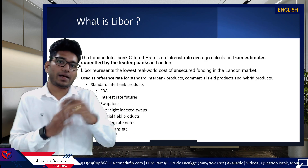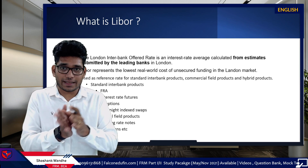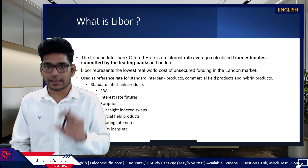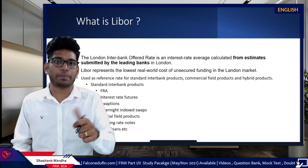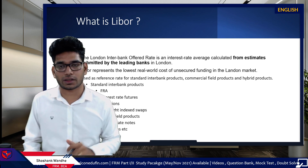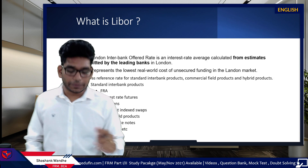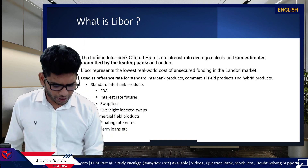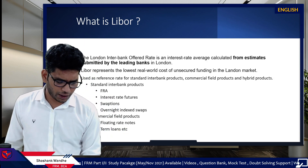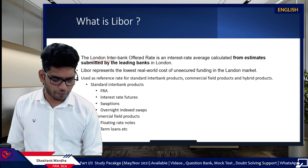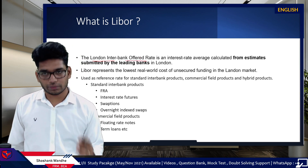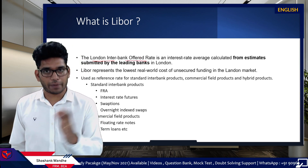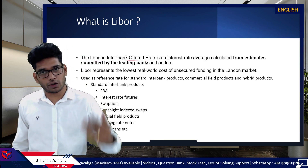That's why, as the reference rate, LIBOR was considered a sound, reasonable, and robust alternative. LIBOR stands for the London Interbank Offered Rate — again, it is the IBOR, the Interbank Offered Rate. For example, in India we have MIBOR, the Mumbai Interbank Offered Rate. Other countries have their respective IBORs based on their country.